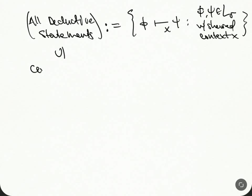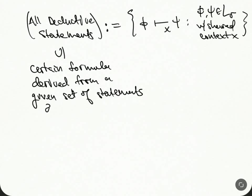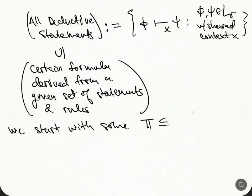We can have certain formulas derived from a given set of statements and rules. These rules will be the rules of inference. There's different rules we can take and different starting statements. It's like we're spanning a set of statements - we start with some statements and then build all the other statements from this. We start with some T, and this thing will be contained in all deductive statements here. This is what we call the theory.